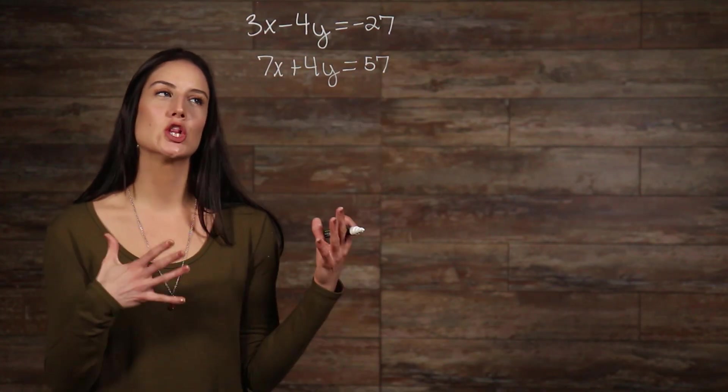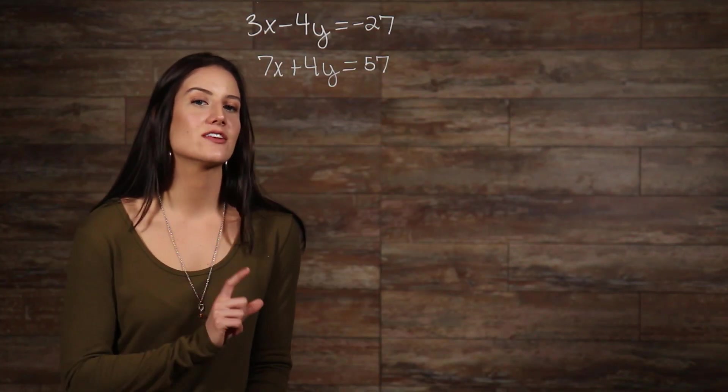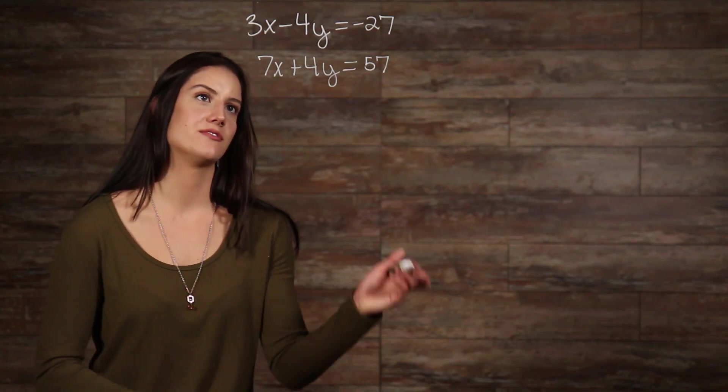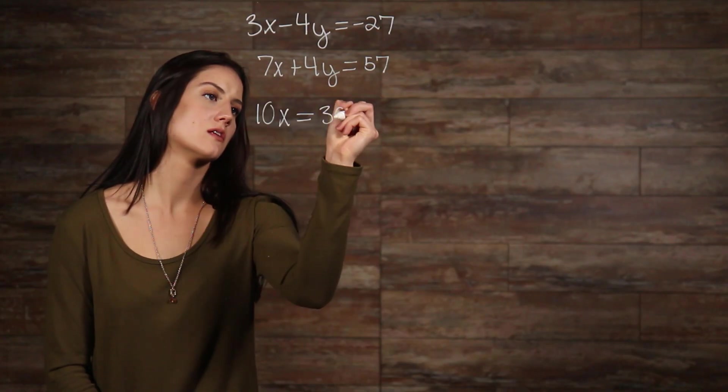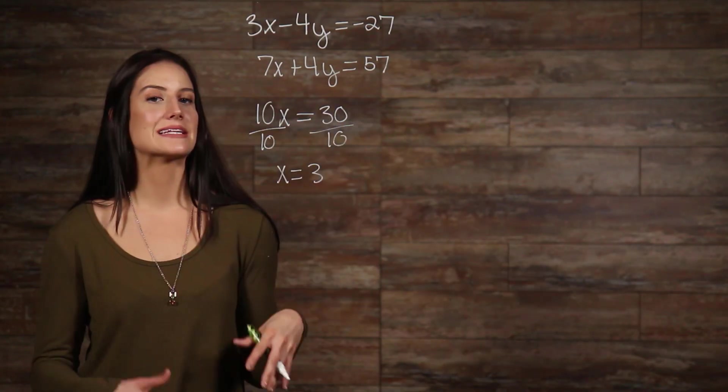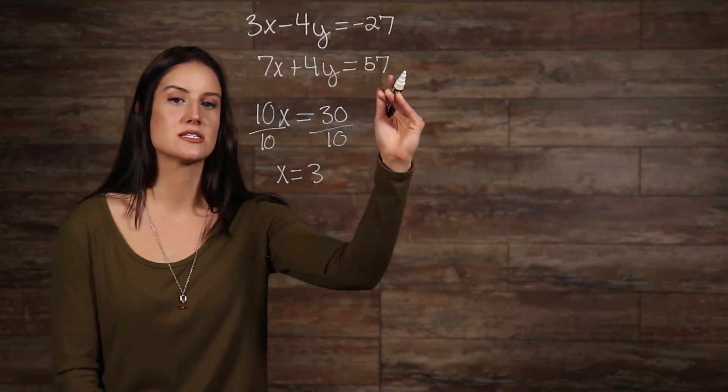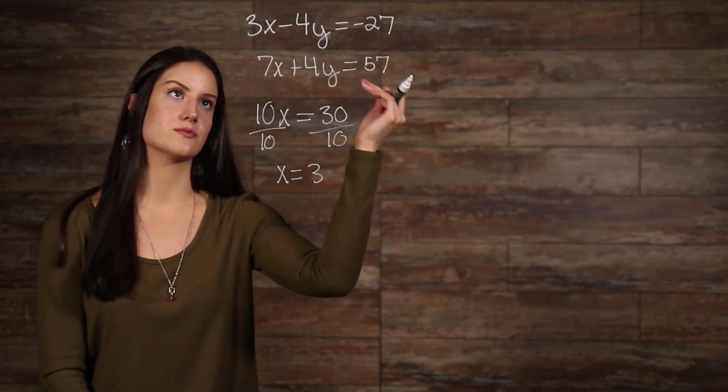We can tell just by looking at it that our y's will cancel out, so once we add the two equations together and we can divide both sides by 10, we can take our x value and plug it into either of our original equations. I'll plug it into our first one here, so we have.